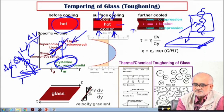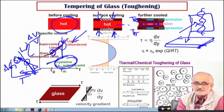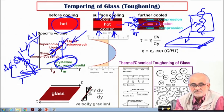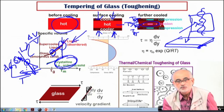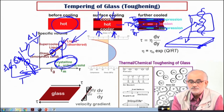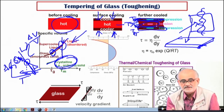Very soon the surface comes to room temperature, but the core still remains at a slightly higher temperature. The core is still at a temperature higher than room temperature, and subsequently the core tries to cool. When it tries to cool, the surface is already very rigid because it has already come to room temperature — this is silicate glass.